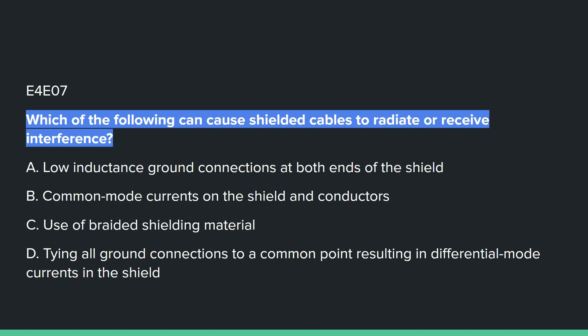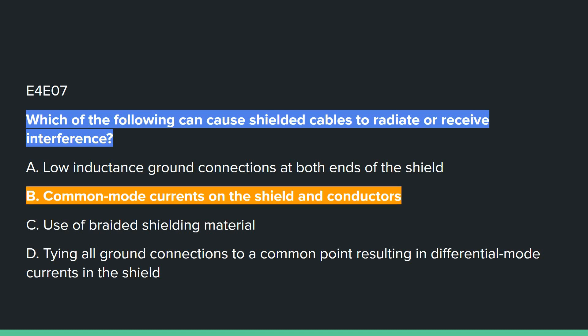E4E07: Which of the following can cause shielded cables to radiate or receive interference? Answer B: common mode currents on the shield and conductors.